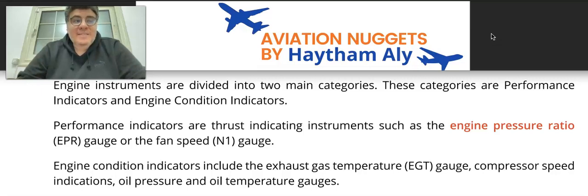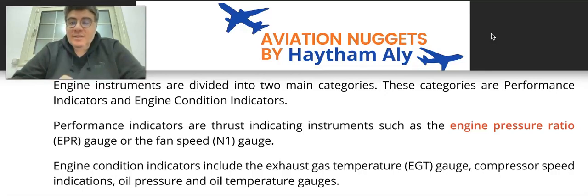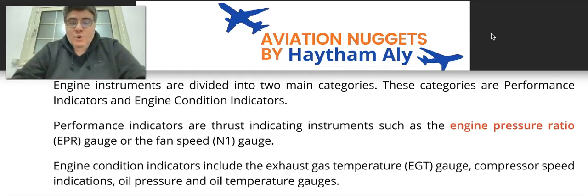We will explain the operating principle of using an engine with EPR indication and explain the consequence of incorrect or missing EPR. In case we lose the EPR indication, the engine must be reverted to N1 mode, because for thrust measurement we use either EPR or N1.